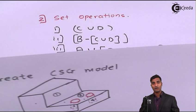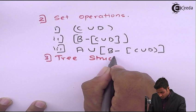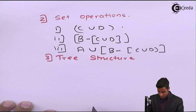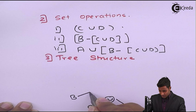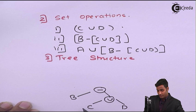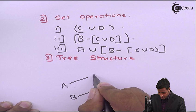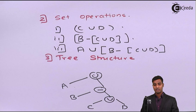The next step is tree structure. Depending upon the set operation, we develop the tree structure. Starting from the simplest: for C and D the operator is union. Then B minus C union D. Then A union (B minus C union D). This is the tree structure for this complex object.